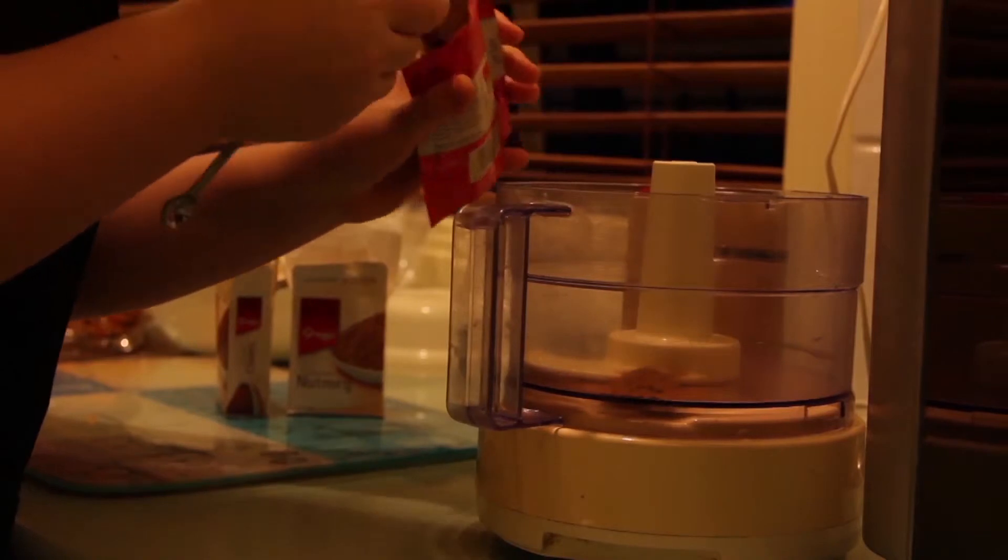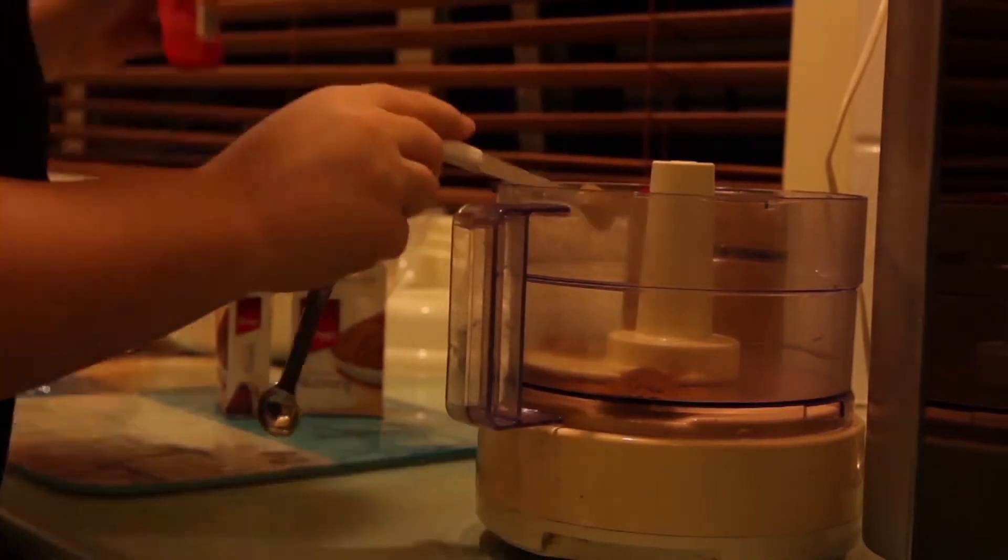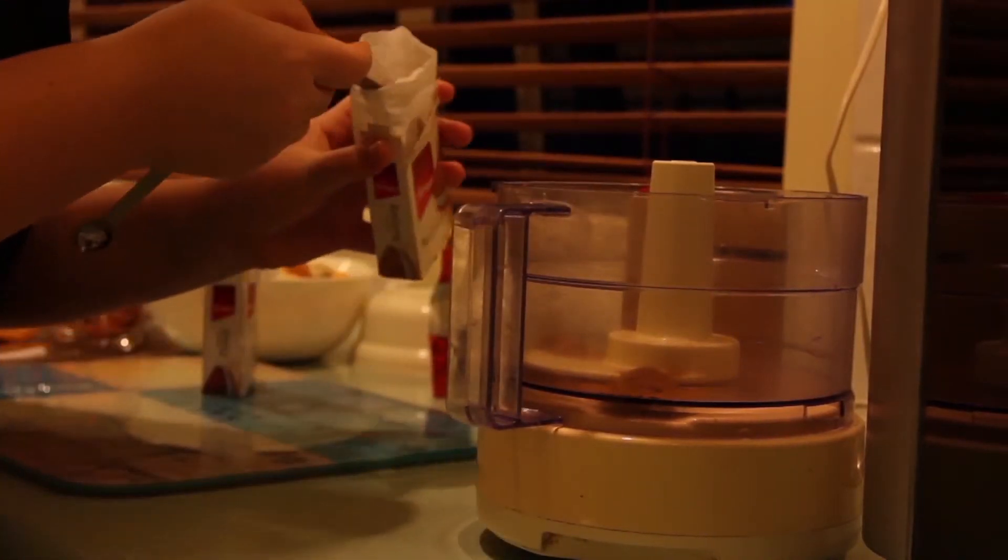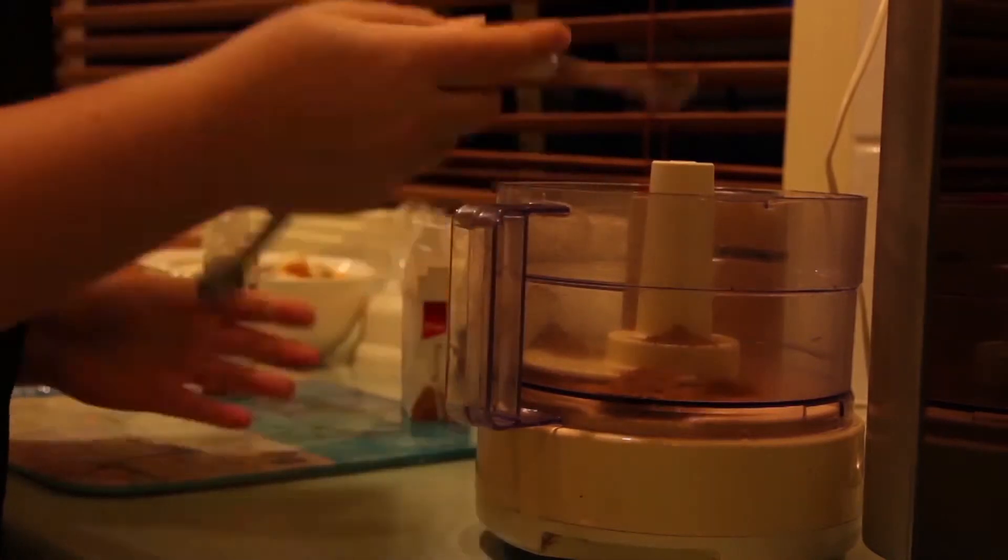And then you put in your spices: one and a half teaspoons of cinnamon, a teaspoon of nutmeg, and a quarter of a teaspoon of ground cloves.